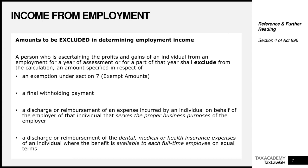The next exclusion is a final withholding payment. A final withholding payment is any payment that has already fully satisfied all its income tax liability at the point the payment was made, so there is no additional tax liability arising from that income amount. We will discuss this in further detail in the session on withholding taxes.